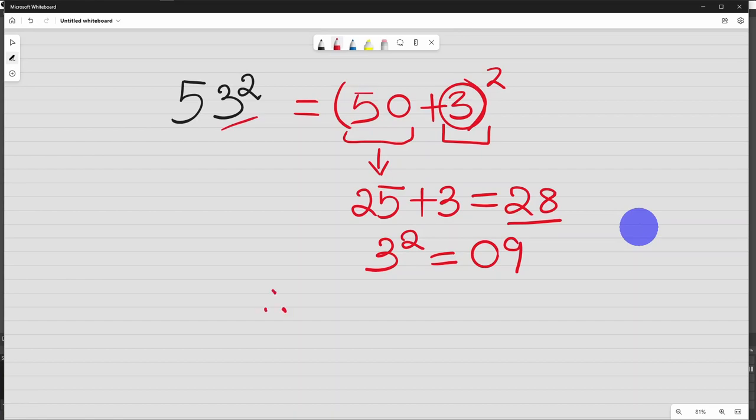Therefore, our 53 square will be, you combine the two answers. These two answers, we have 28, 09. So this is the square of 53. Let me take two more examples.